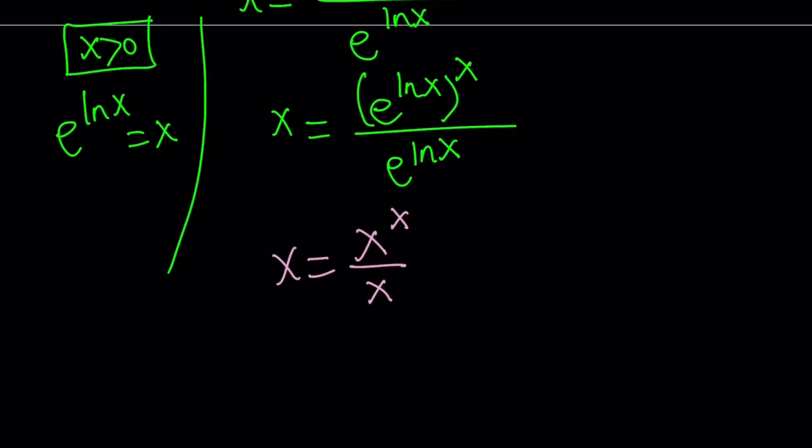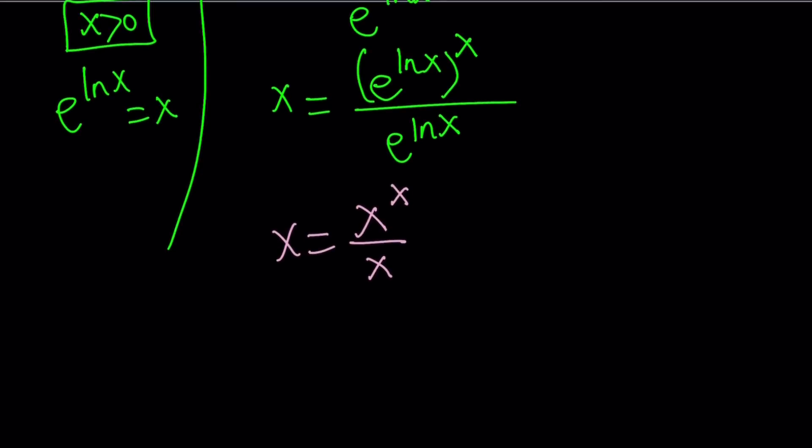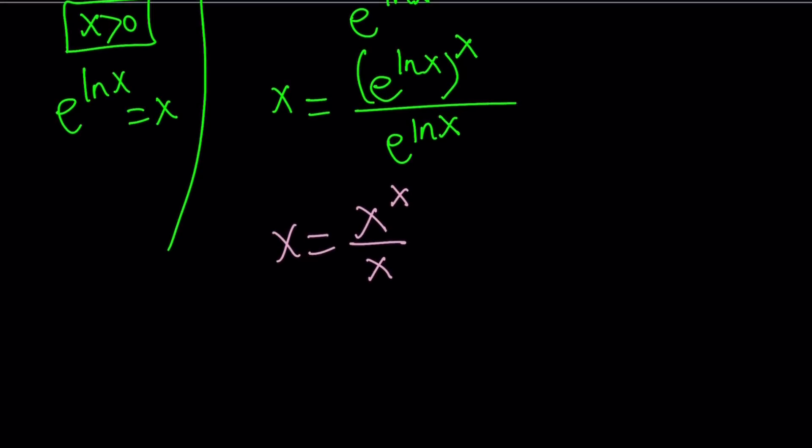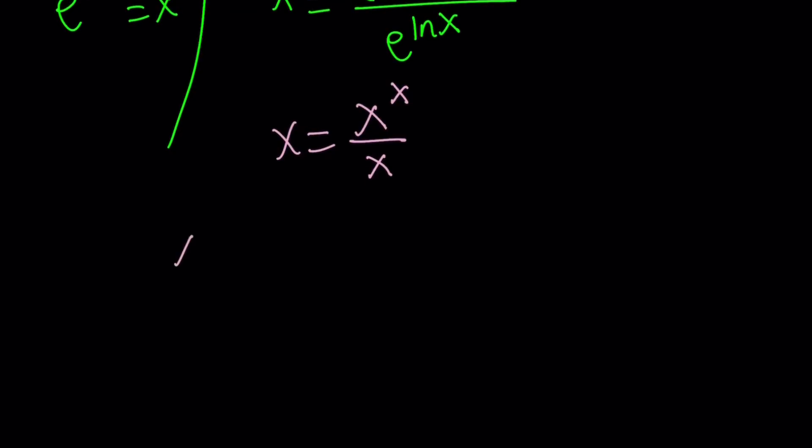So why don't we just go ahead and cross-multiply, noting that x does not equal 0 because we know that by definition or by domain, we know x is greater than 0. So x cannot be 0. We're good. Let's go ahead and cross-multiply. We get x to the power x is equal to x squared.